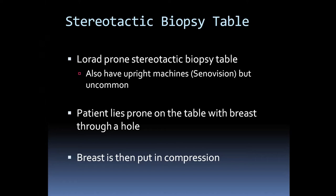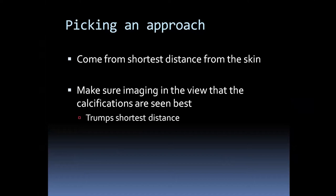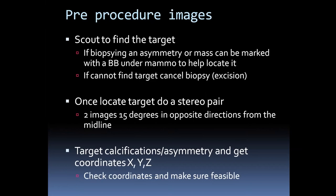For approach selection in a stereotactic biopsy, you want to come from the shortest distance from the skin. Look at the CC and MLO mammographic views to identify the shortest distance to the skin. Then look at the orthogonal view to confirm the lesion is visible in that approach. If calcifications are hard to see on the CC view, that approach is not ideal even if it's the shortest distance — you can't biopsy what you can't see. Visualization always trumps shortest distance, but start with the shortest distance if visualization is adequate.